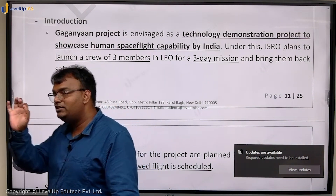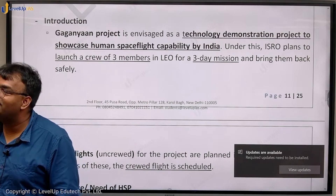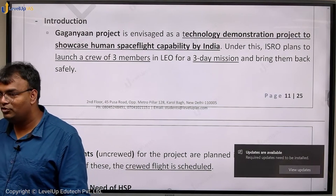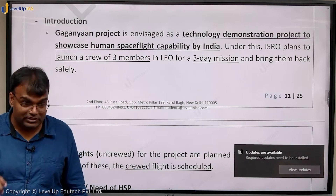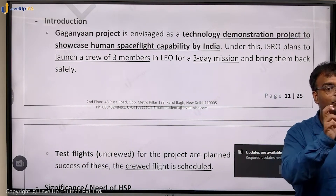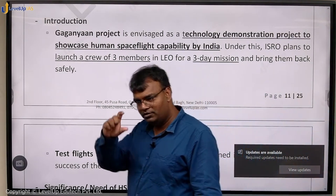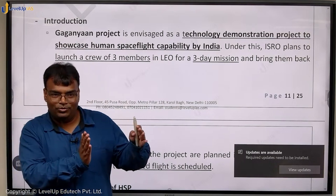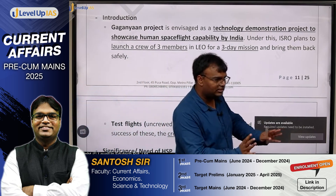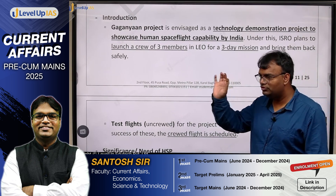You could also start data-based: so far only three countries have sent humans to space — the US, Russia, and China. India or ISRO is working to make India the fourth country to achieve this. That is another way you could start your answer. So Gaganyaan — define it, give background, or give some data: three countries have done it, ISRO is working towards making India the fourth country to send humans to space.